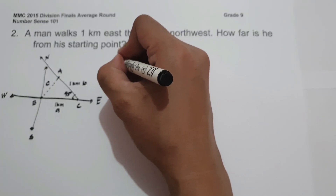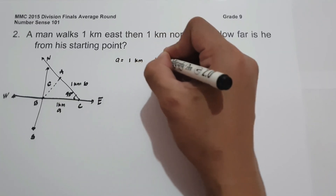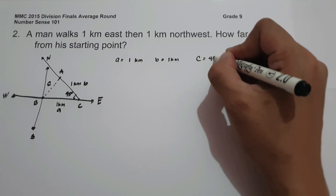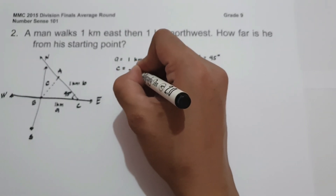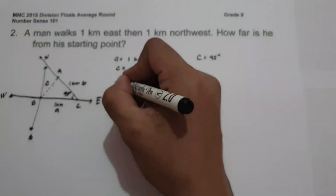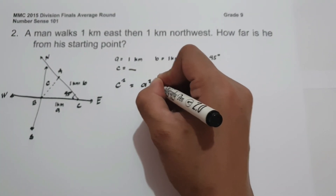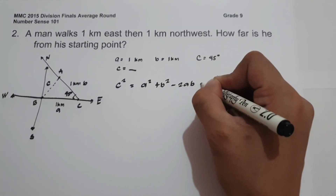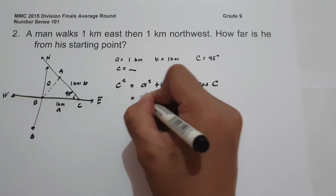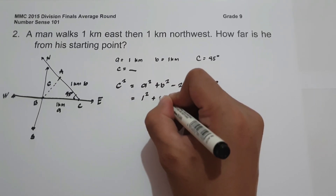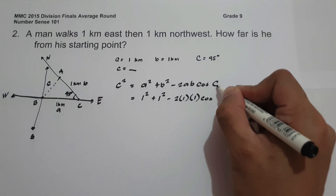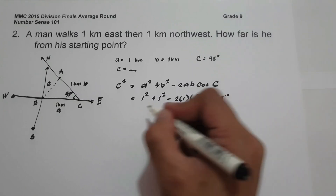To find the measure of side c, let us use the formula for the law of cosines: c squared equals a squared plus b squared minus 2ab times cosine C. Substituting the given values: 1 squared plus 1 squared minus 2 times 1 times 1 times cosine 45 degrees.